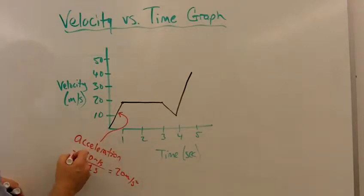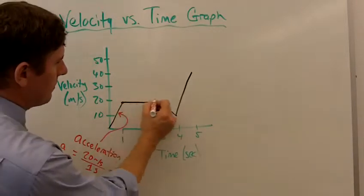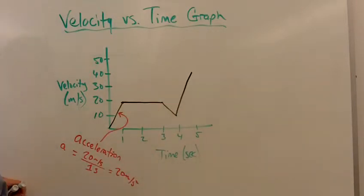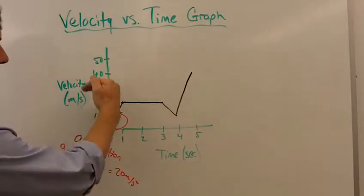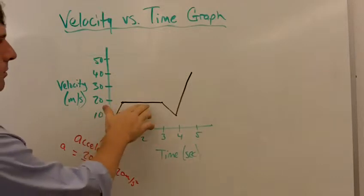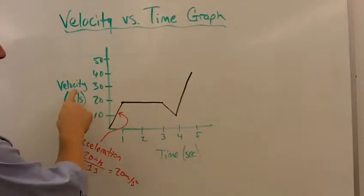Well, what about this flat line right here on top? What does that mean? In a distance versus time graph, that would mean that it's not changing its distance while time is still increasing, so that would mean it's stopped. But not so for a velocity versus time graph.